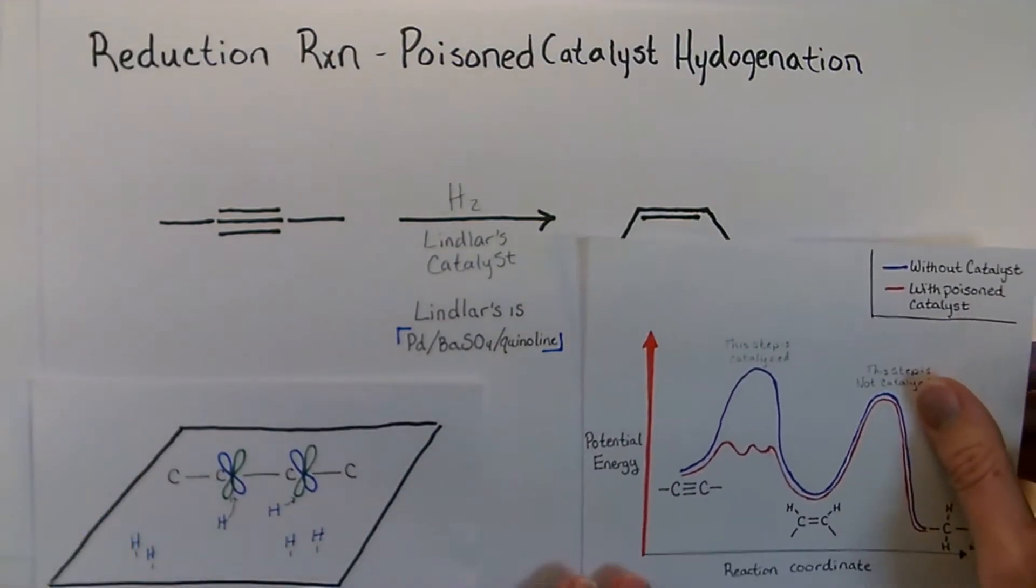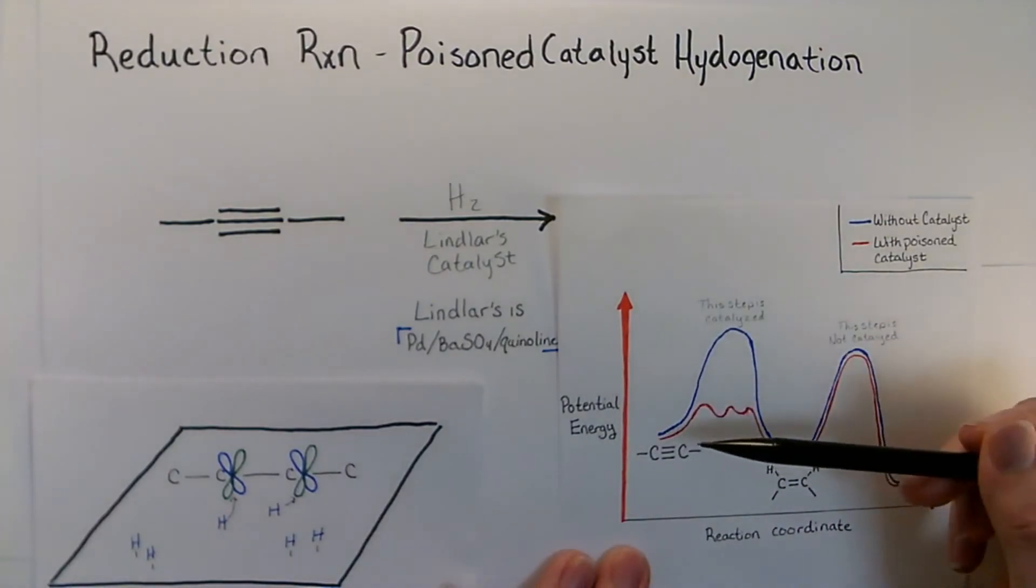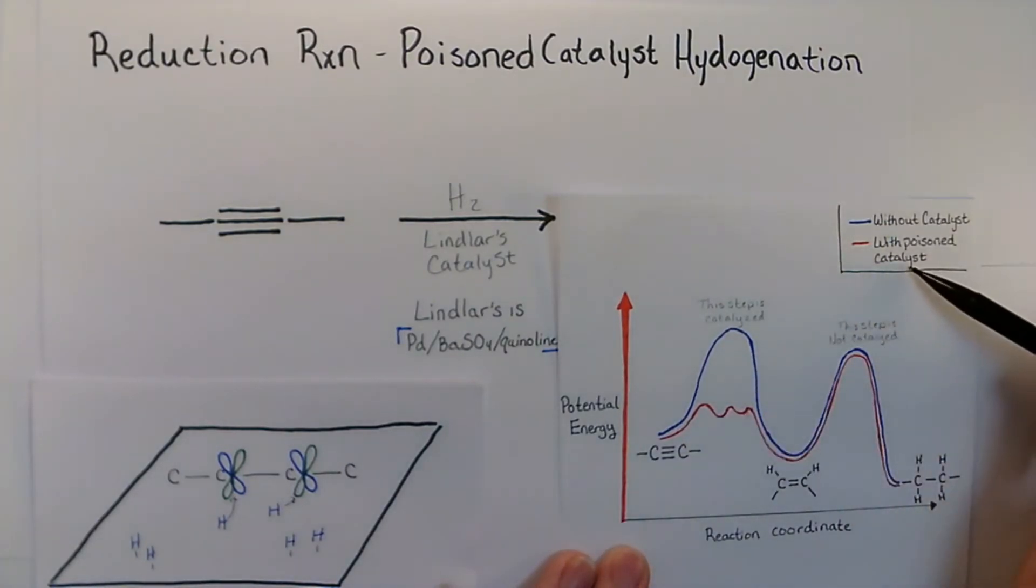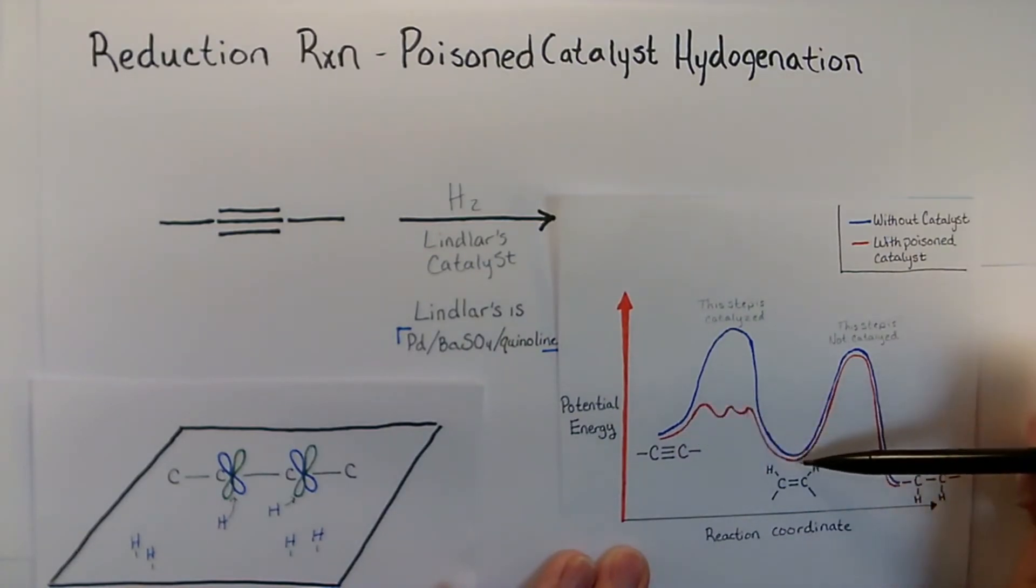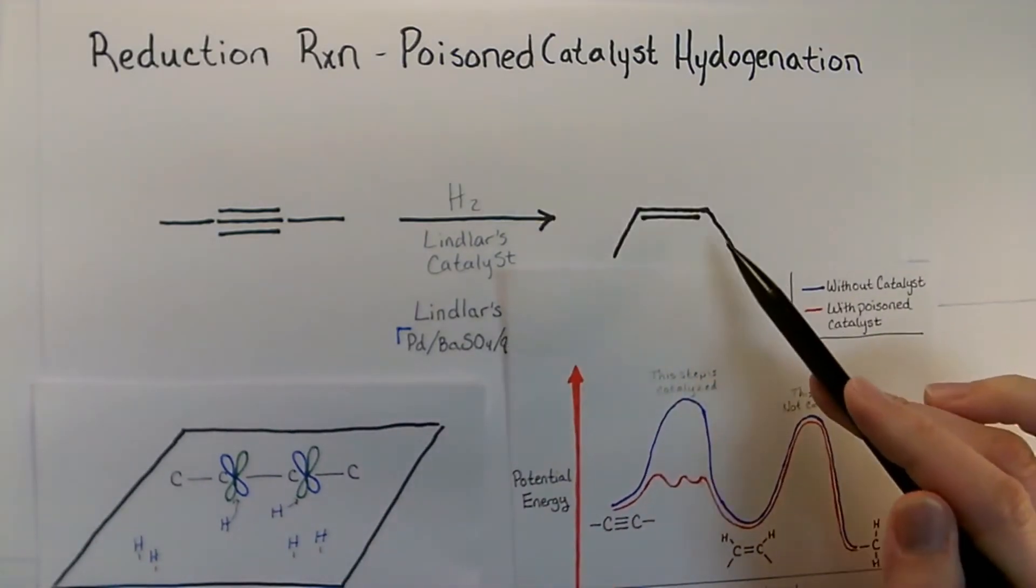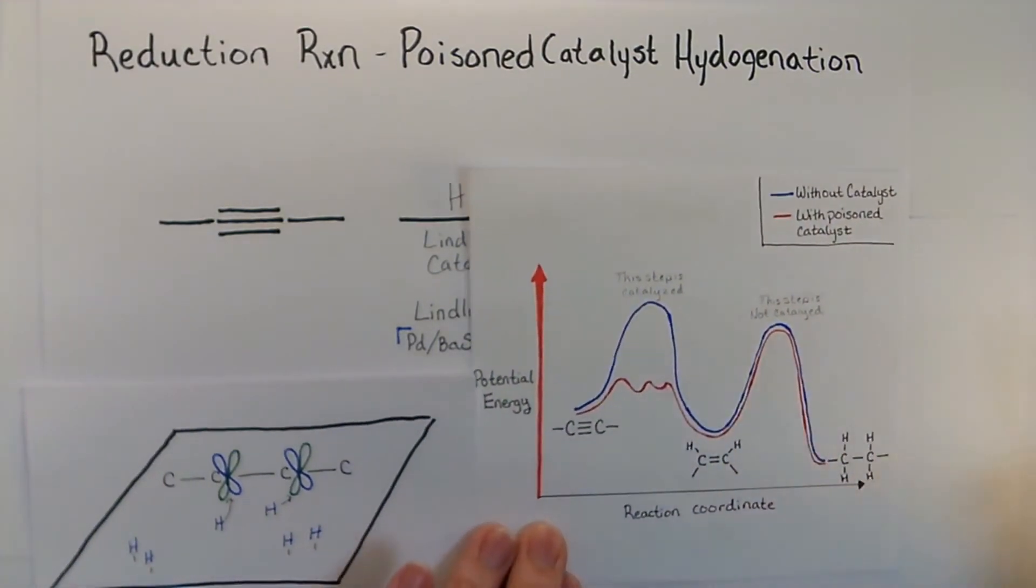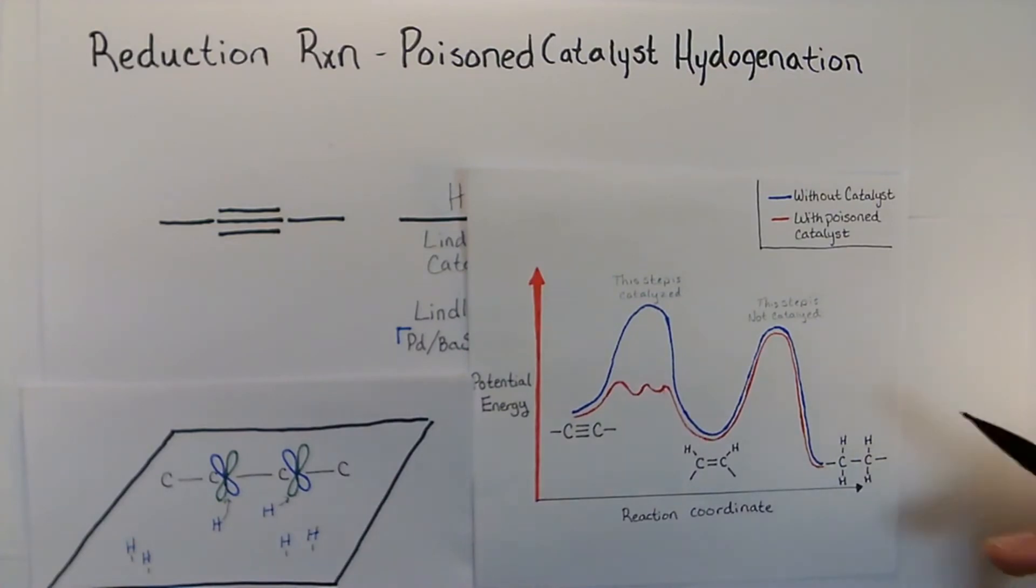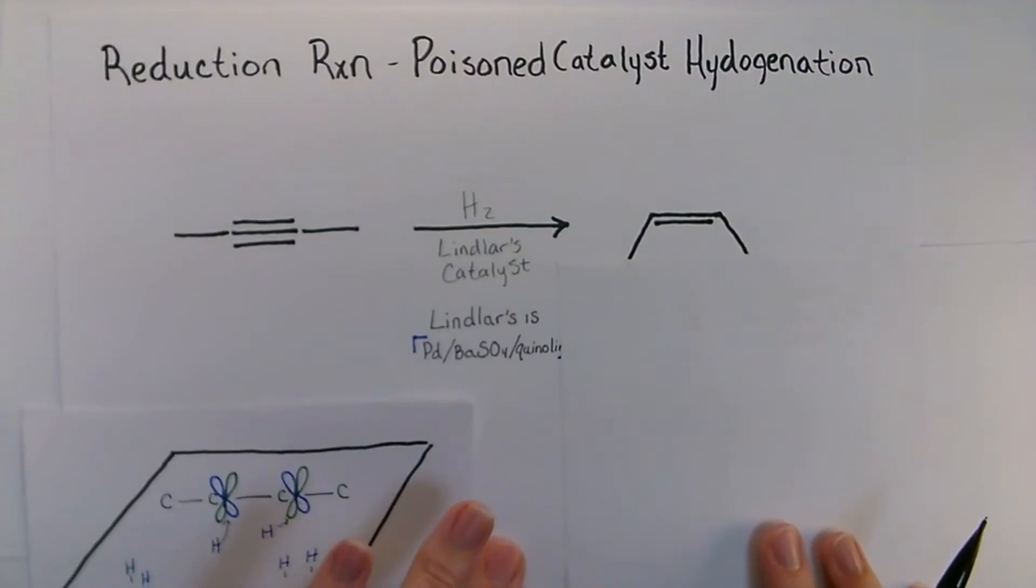Here we can see the activation energy is reduced with the poisoned catalyst and so the intermediate with the alkene is favored. Here we get the cis alkene and so the amount of energy it takes to get to the alkene actually is about the same as the previous step.